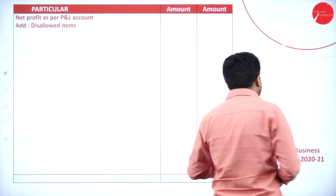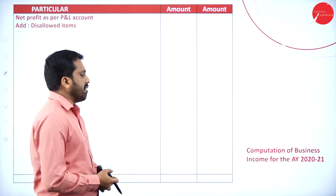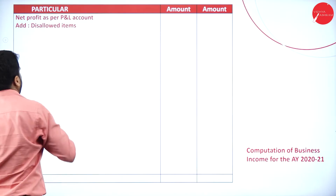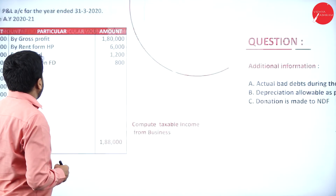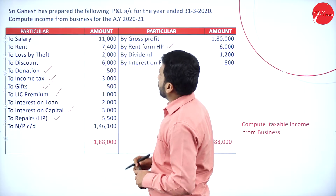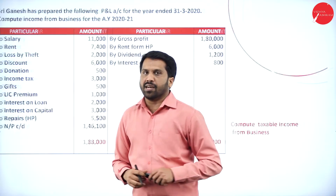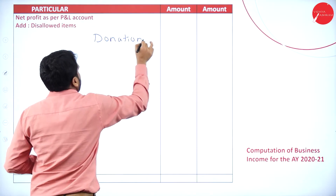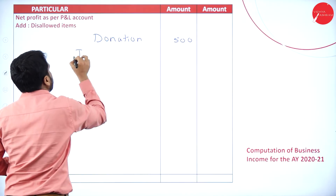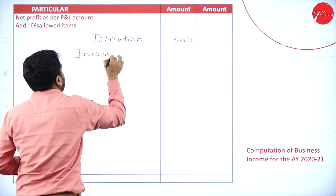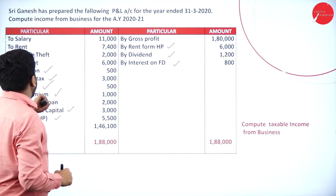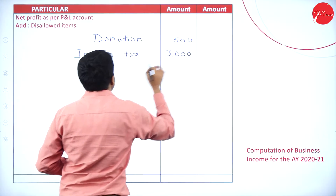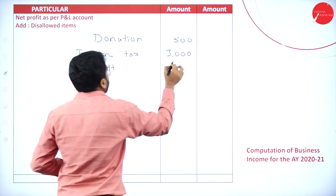The heading must be: Computation of Business Income for the Assessment Year 2020–21. We go one by one. First, the non-business expenses to be added back: donation 500, income tax 3,000, and gift 500.